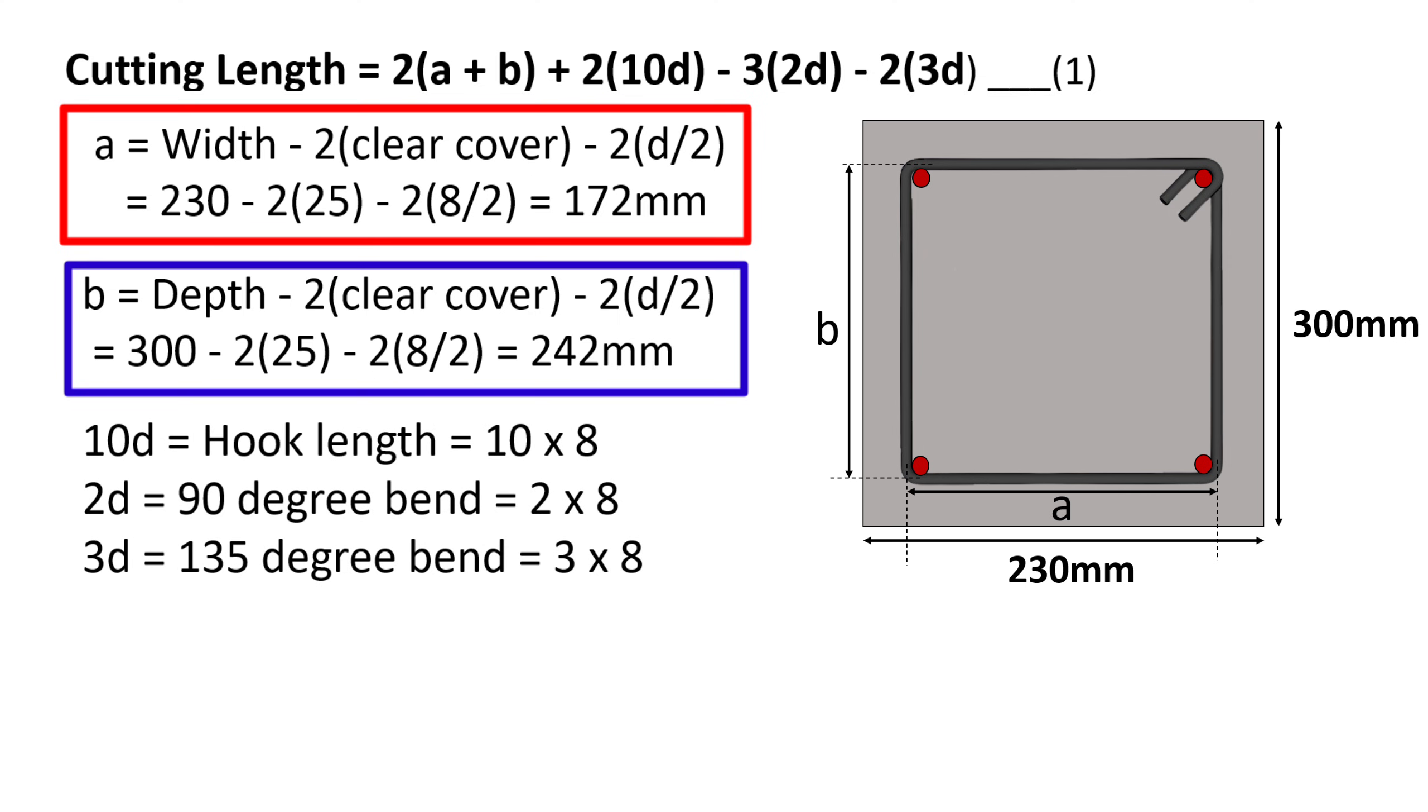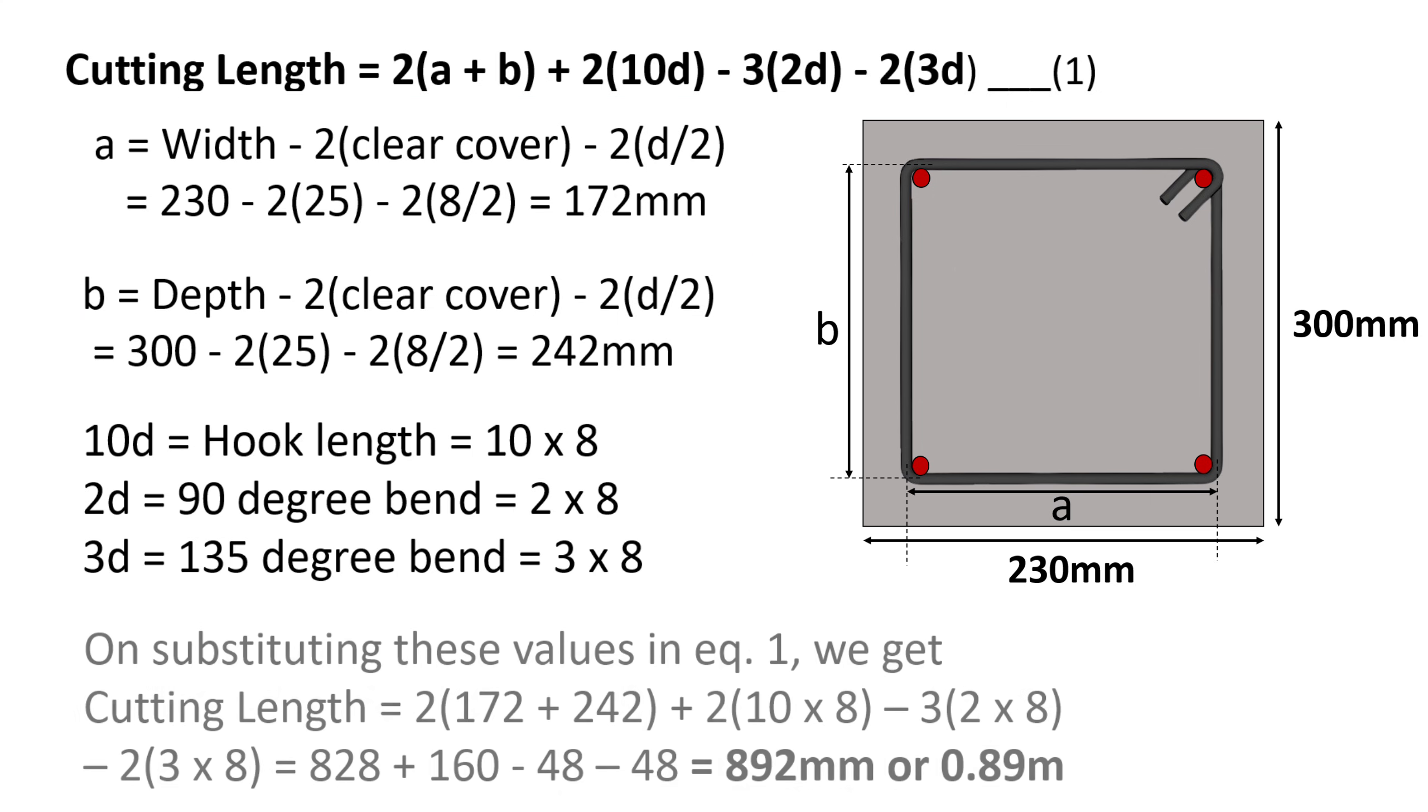10d is the hook length, which equals 10×8. 2d is for 90-degree bend, which equals 2×8, and 3d is the formula for 135-degree bend, which is 3×8.